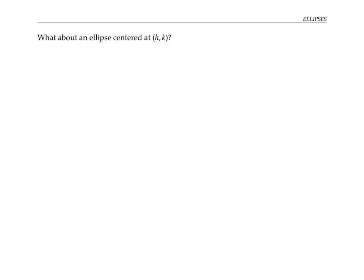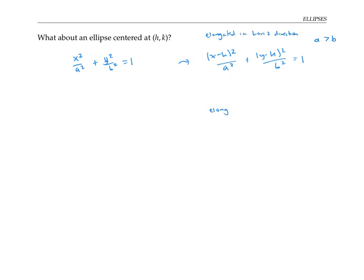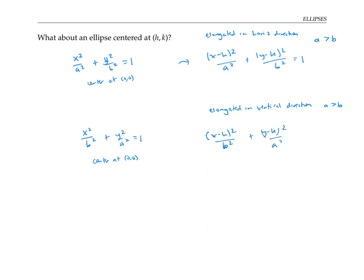Our previous ellipses were centered at the origin. If the ellipse is centered instead at an arbitrary point (h, k), we shift everything by h horizontally and k vertically. For a horizontally elongated ellipse with a > b, the equation becomes (x − h)²/a² + (y − k)²/b² = 1. For a vertically elongated ellipse, reversing the roles of x and y gives (x − h)²/b² + (y − k)²/a² = 1.